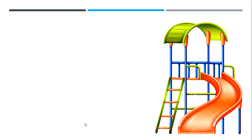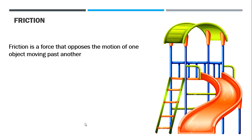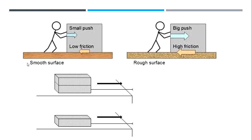Now, most of you have been on a slide at the park. For the slide to be fast, you know it should be very slippery. Friction actually makes it difficult to slide on rough surfaces. Friction is the force that opposes the motion of one object moving past another. Friction depends on the surfaces — if the surface is smooth, the friction is very low.